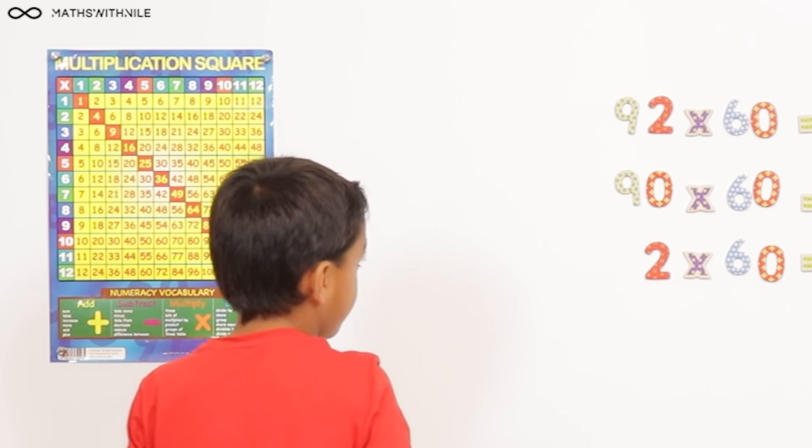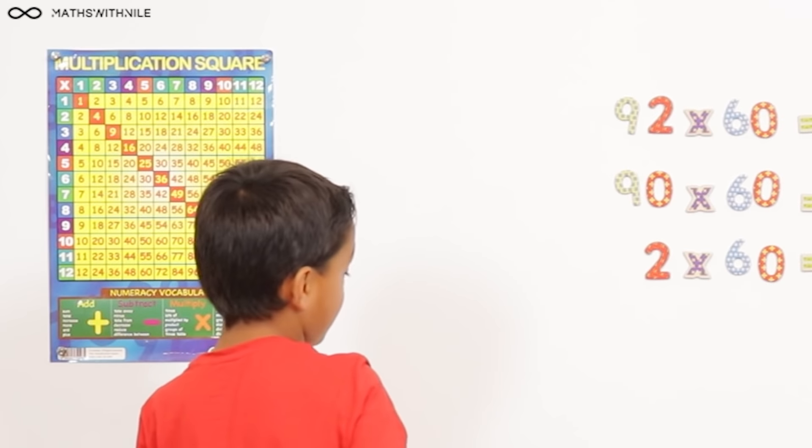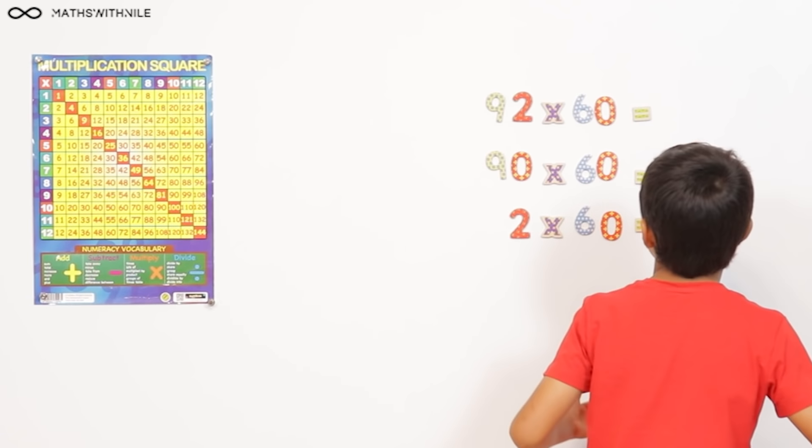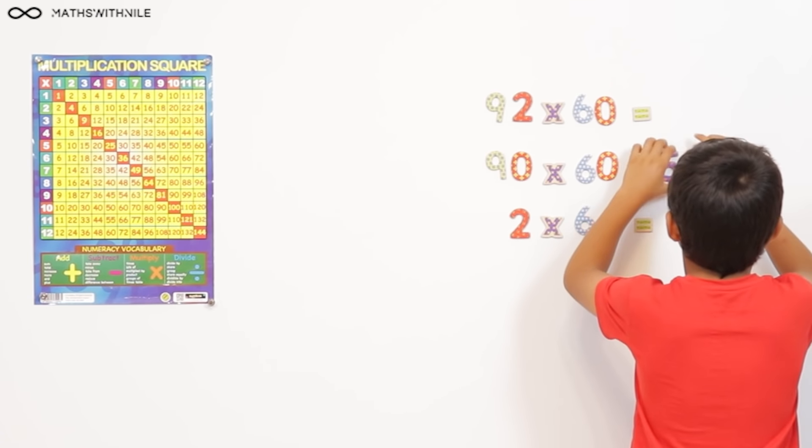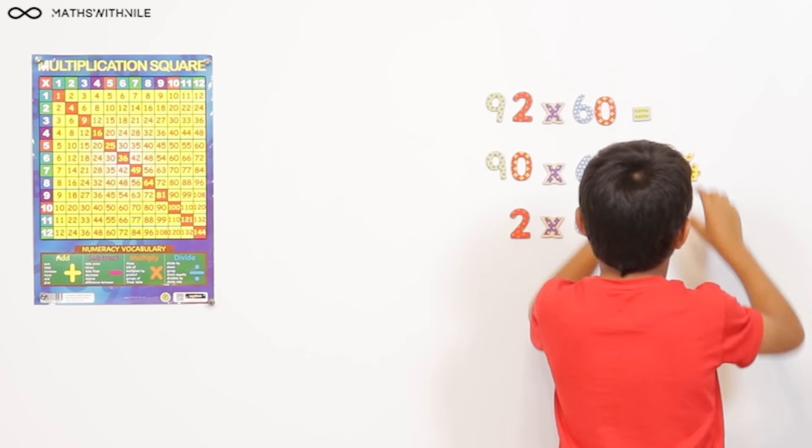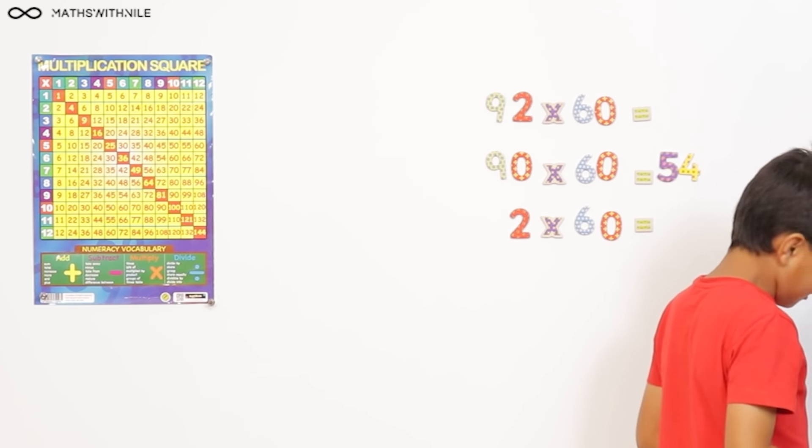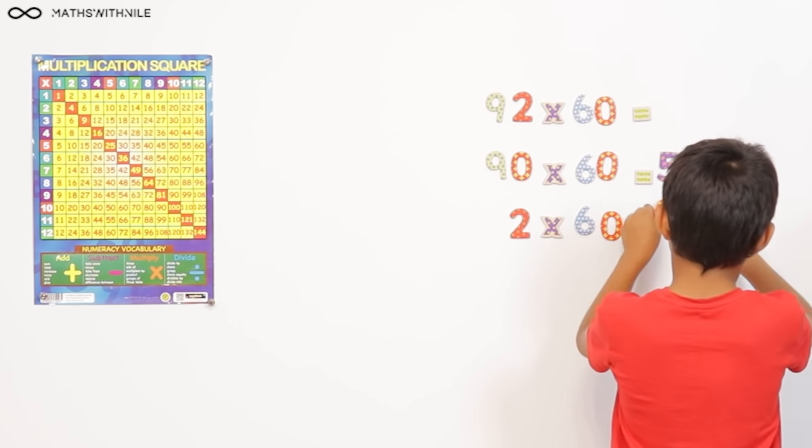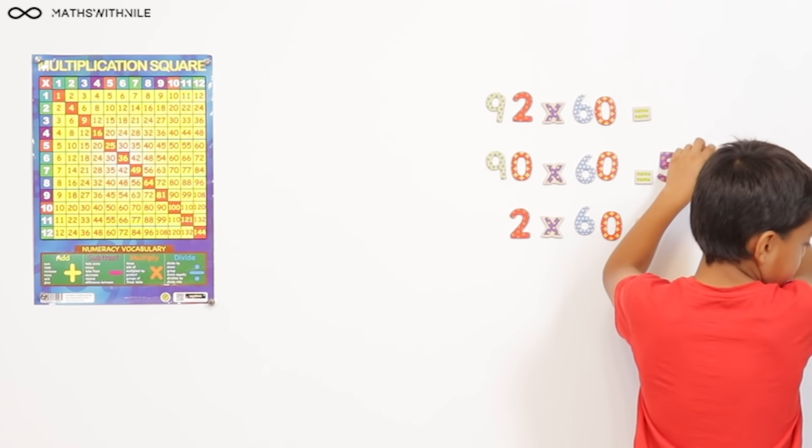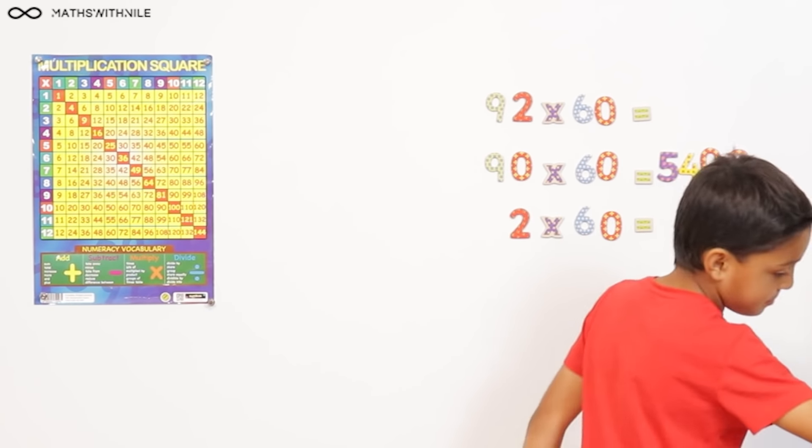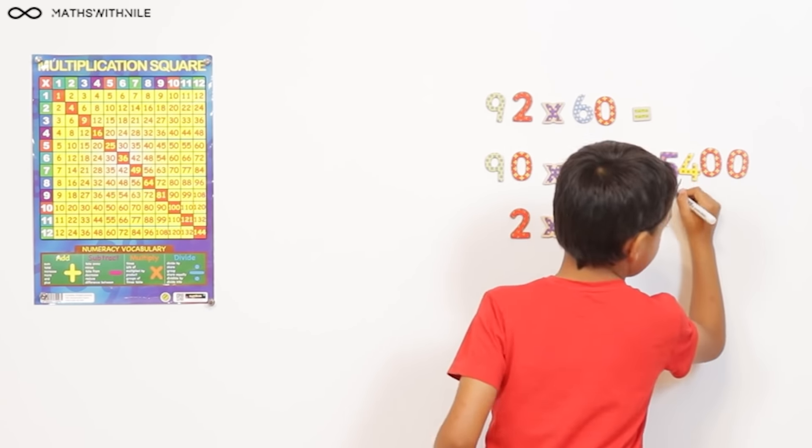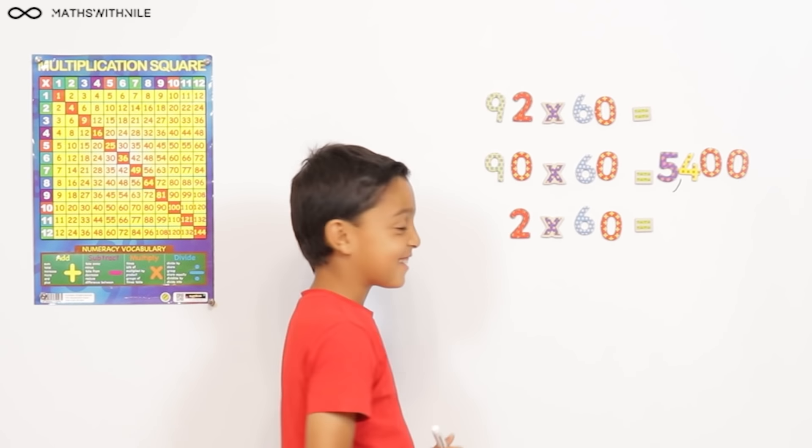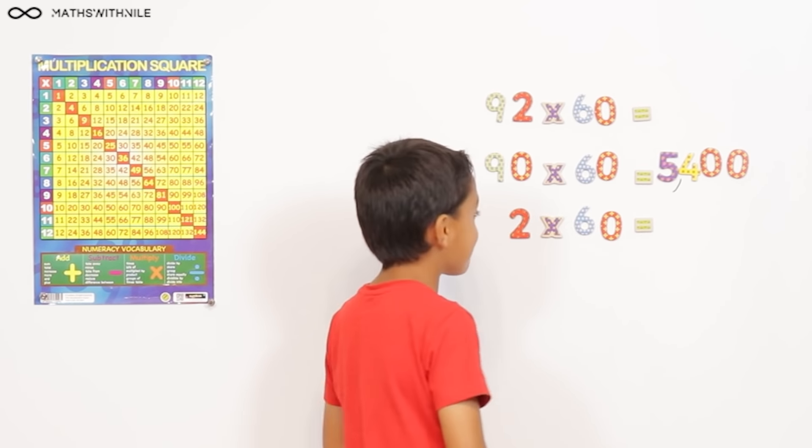54. And then add two zeros. Oh, I know what it is. 5,400. Yeah? Yes. If you run out of zeros, use your pen. Let's have a look. Very good. And what about the second part?